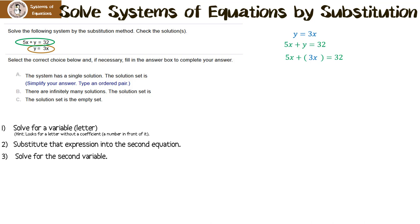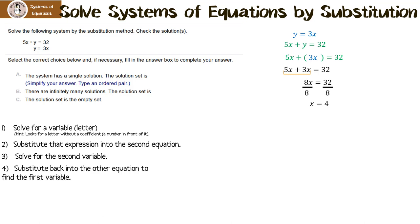Now we're going to solve for the second variable, which is x in our case. I'm going to collect like terms first. So 5x plus 3x is 8x equals 32. I want to get x by itself, so I need to divide both sides by 8. That gives me x equals 4. Now we're going to substitute back into the other equation to find y. I decided to use y equals 3x. We know x is 4, so 3 times 4 is 12, so y equals 12.